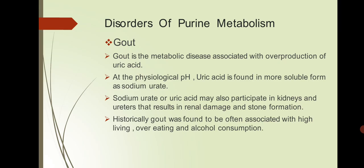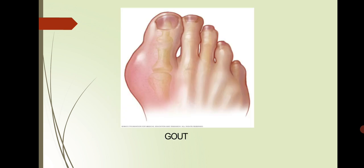Now let us see the disorders of purine metabolism. First is gout. Gout is a metabolic disease associated with the overproduction of uric acid. At physiological pH, uric acid is found in a more soluble form as sodium urate. Sodium urate or uric acid may also accumulate in the kidney and ureters, resulting in renal damage and stone formation. Historically, gout was often associated with high living, overeating, and alcohol consumption.